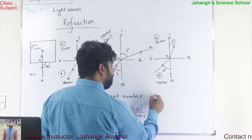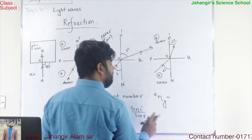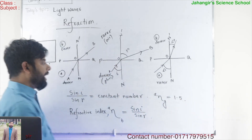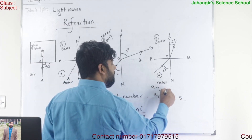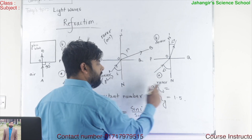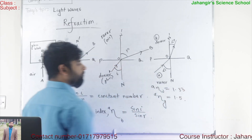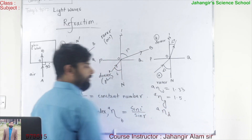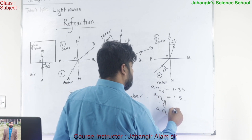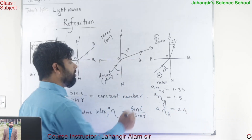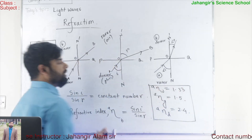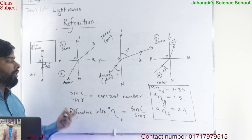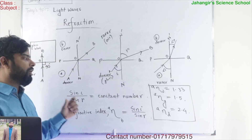When light passes from air to glass, the refractive index of glass with respect to air is 1.5. When light passes from air to water, the refractive index of water with respect to air is 1.33. When light passes from air to diamond, the refractive index of diamond with respect to air is 2.4. These values are all fixed for a particular color of light. The value of the refractive index does not depend on the angle of incidence or angle of refraction.